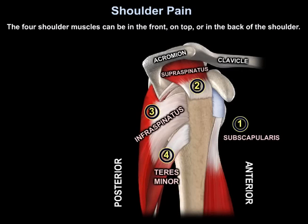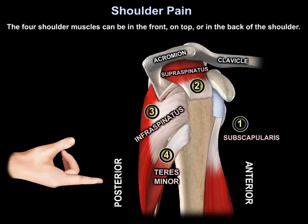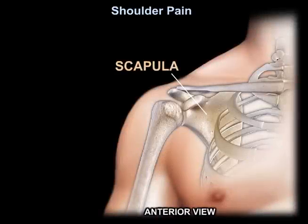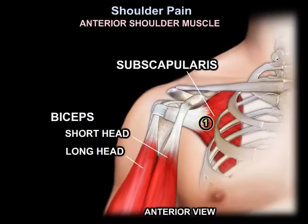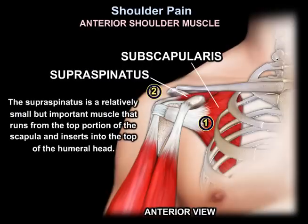The four shoulder muscles can be in front or in the back of the shoulder. The subscapularis muscle is present in front of the shoulder. Here you can see the relationship between the subscapularis muscle and the two heads of the biceps muscle. The supraspinatus is a relatively small but important muscle that runs from the top portion of the scapula and inserts into the top of the humeral head.